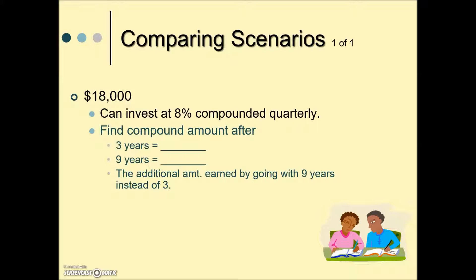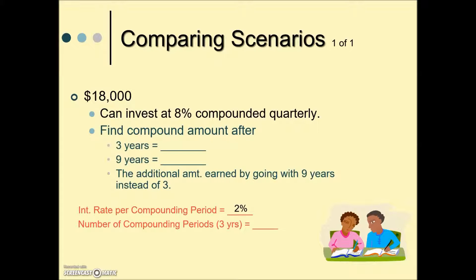In this last example, $18,000 can be invested at 8% compounded quarterly, and we're asked to find the compound amount after three years and after nine years. We need to find our interest rate per compounding period: 8% divided by 4 gives us 2%. How many compounding periods happen in 3 years? Quarterly is 4 times per year times 3, giving us 12. Looking those values up on the table gives us the multiplier, and multiplying it by our principal shows what the $18,000 is worth at the end of 3 years.